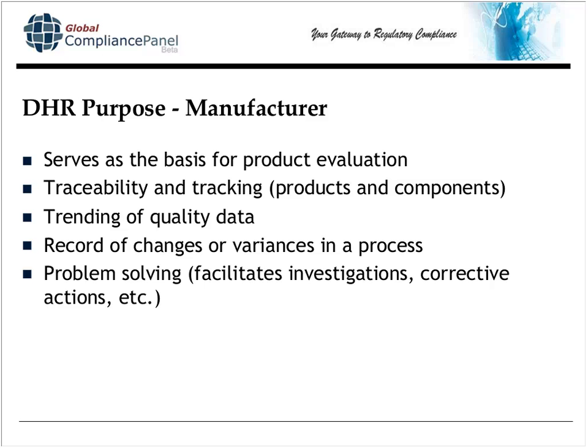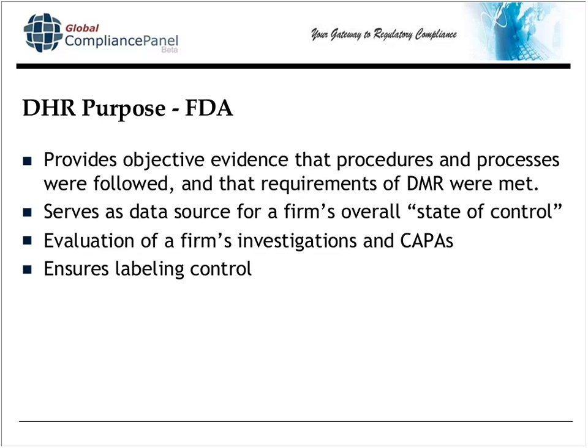The DHR also lets you do problem solving. When it comes to investigations or corrective actions, all the documented information assists you in performing investigations for complaints. From the agency's perspective, the DHR shows that you followed your own procedures and your product is in compliance with the DMR. The agency likes to use the term 'state of control,' and the DHR is a great data source for them to qualify that. The FDA also likes to see you use your DHRs and reference them when investigating in-process nonconformances and field-reported nonconformances, and they like to see that information fed into your CAPA system. Label control is also documented in your DHR, enabling you to control labels better.